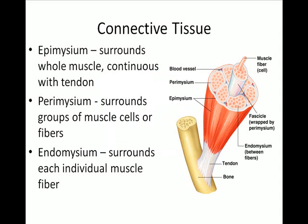Here is an entire muscle. An individual muscle fiber or muscle cell is wrapped with connective tissue called endomysium. Multiple muscle fibers are all wrapped together in a connective tissue called perimysium. The perimysium-wrapped fibers are called fascicles, and then fascicles are wrapped together to make an entire muscle.